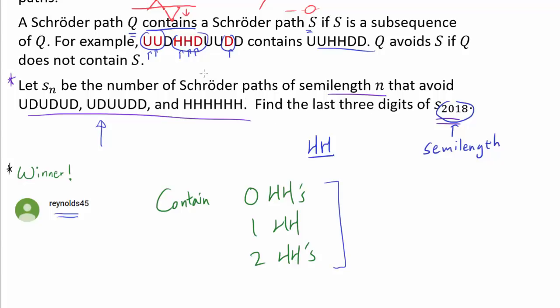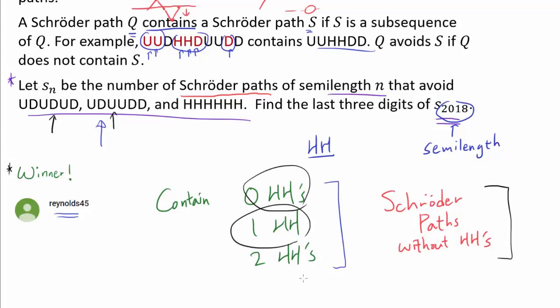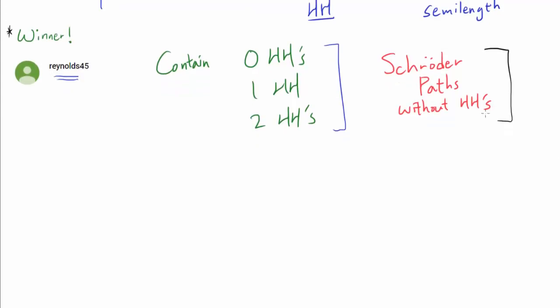And now, one of the things we may realize is that we don't really have to focus on any Schröder paths, but we can really focus on Schröder paths without HHs. Because the two of the patterns that we are trying to avoid do not contain Hs. So, once we find a Schröder path without HHs that avoid UDUDUD and UDUUDD, then we can just add in 0 Hs, or 1 HHs, or 2 HHs to get the Schröder path that we want.